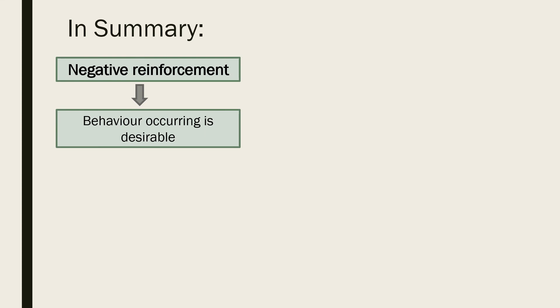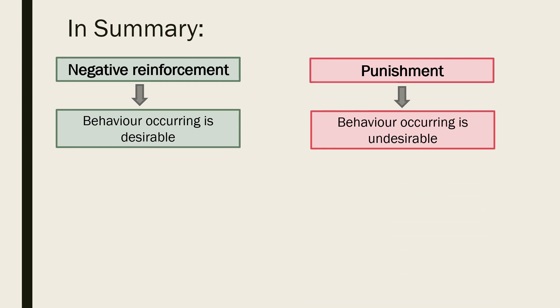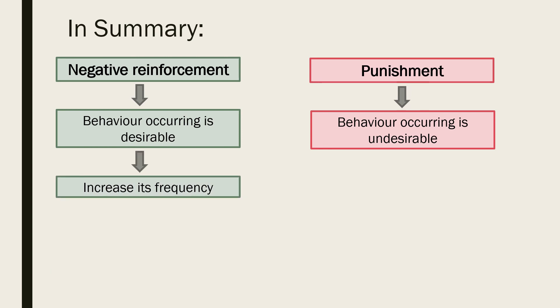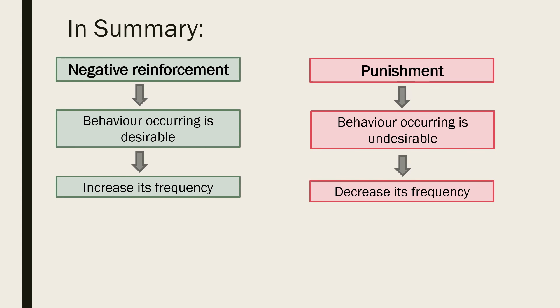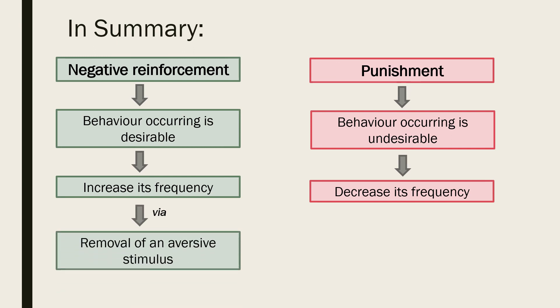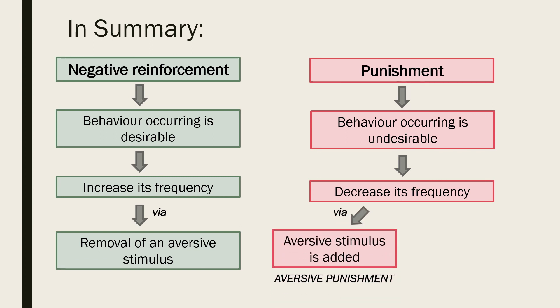In summary, negative reinforcement is used when the behaviour occurring is desirable, whereas punishment is used when the behaviour is undesirable. Negative reinforcement involves increasing the frequency of a behaviour, whereas the aim of punishment is to decrease the frequency of a behaviour. Negative reinforcement increases the frequency of a desired behaviour via the removal of an aversive stimulus. In contrast, punishment can decrease the frequency of an undesired behaviour via the addition of an aversive stimulus — known as aversive punishment — or via the removal of a desirable stimulus, which is called response cost.